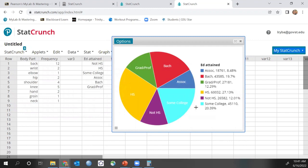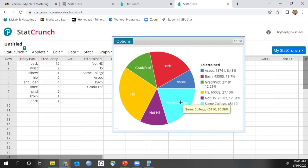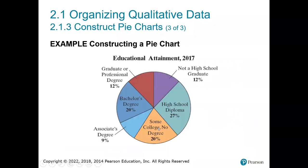The percents should match what we calculated: associates is 8.48%, some college 19.7%, not high school 12.29%, bachelor's 27.13% — they all line up correctly. A nice thing about StatCrunch is that the pie chart gives me both the total count and the percent, whereas many pie charts only give the percent. We can see the most common level is just a high school diploma, followed by some college, then bachelor's degrees, graduate degrees, not high school, and associate's degrees. Different software may display it slightly differently but the results are the same.